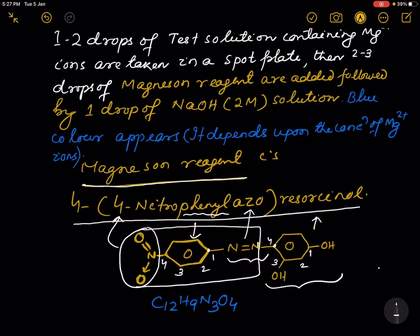This is resorcinol. So the name is 4 - this 4 is written over here - then this 4 is here: 4-nitro. This group is the nitro group. 4-nitrophenylazo-resorcinol.